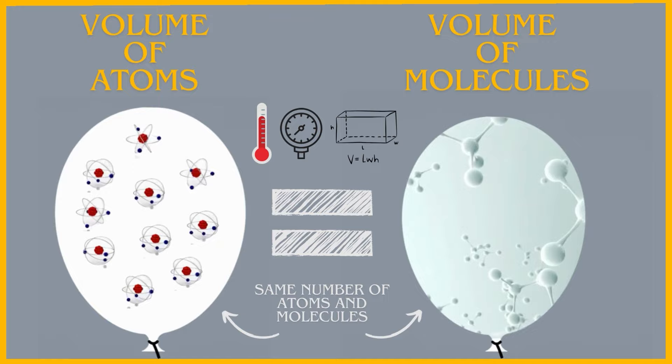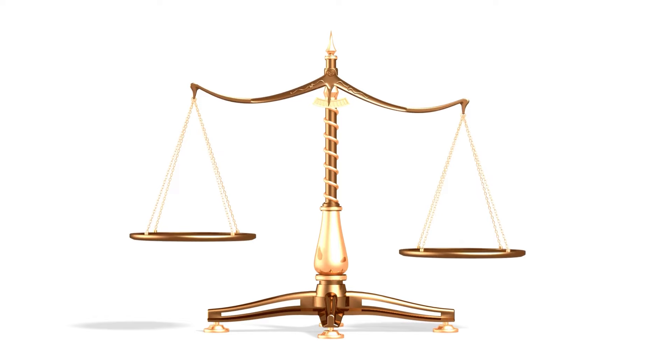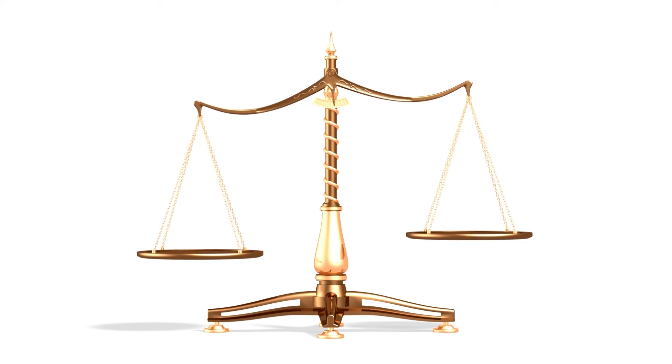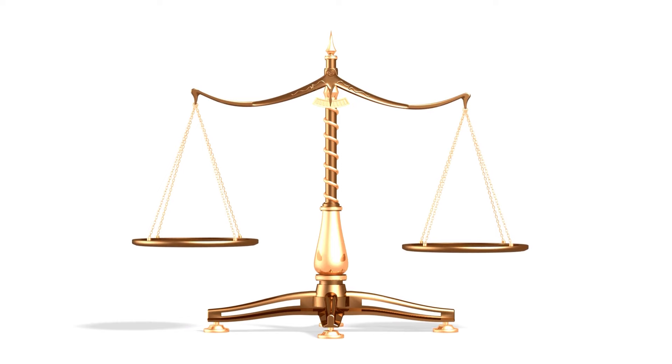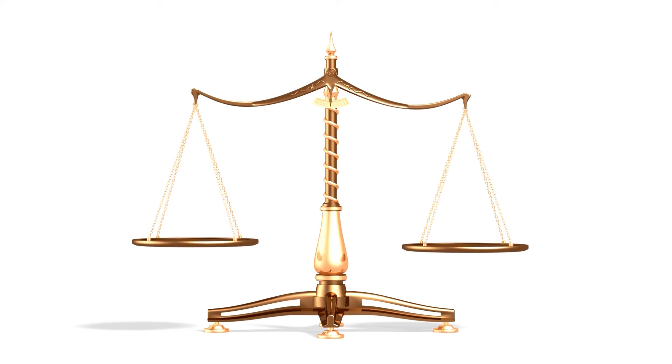This observation, known as Avogadro's principle, gave scientists a way to compare the relative sizes and masses of atoms. By understanding how much volume a known amount of a gas occupies, and knowing the number of particles in that volume, they could make inferences about the average size of those particles.